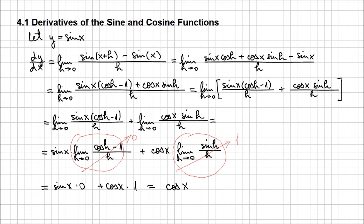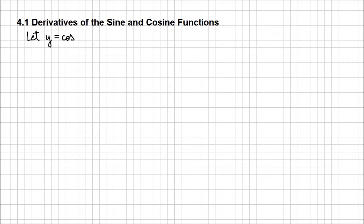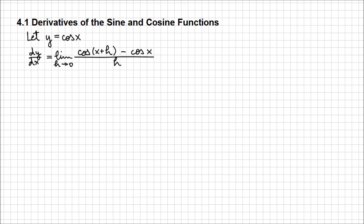In conclusion, the derivative of the function sine of x is equal to cosine of x. This is an algebraic approach to determine the derivative of sine of x. In the same manner, let's consider the function y equals cosine of x and determine its derivative using the first principle definition.